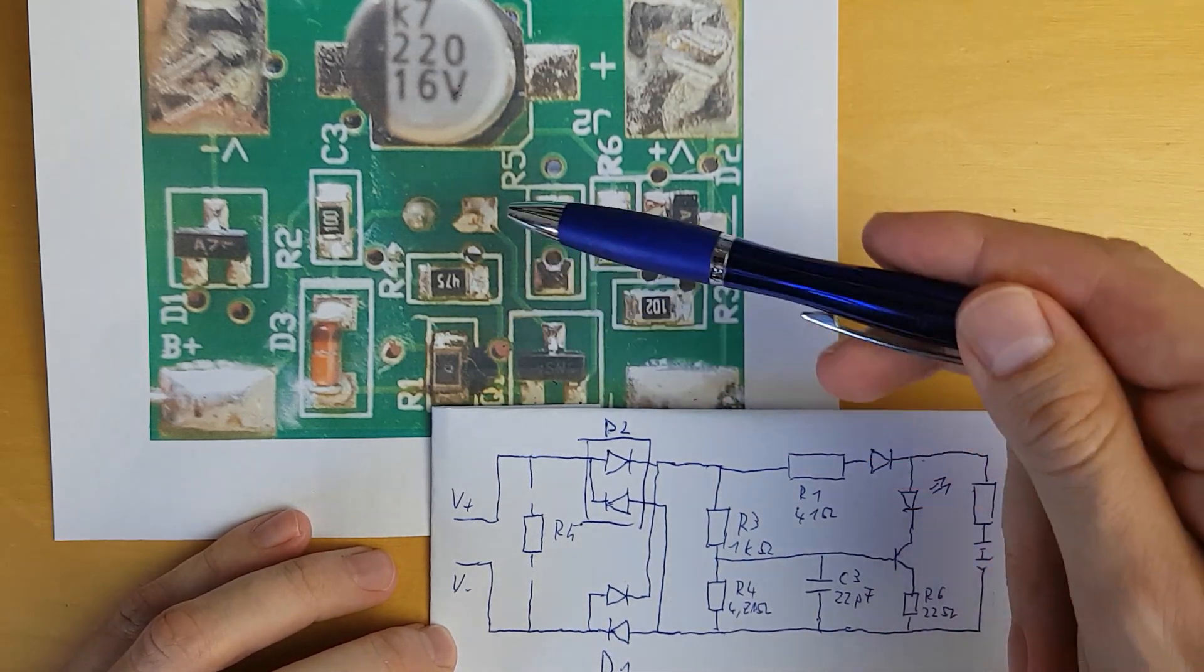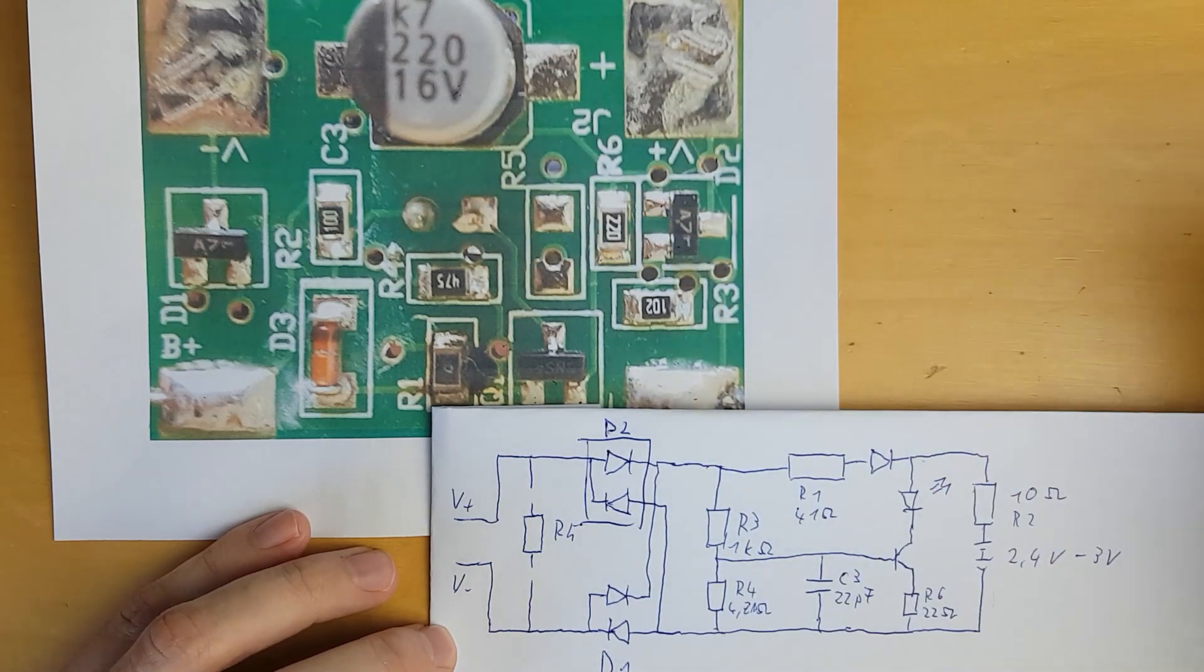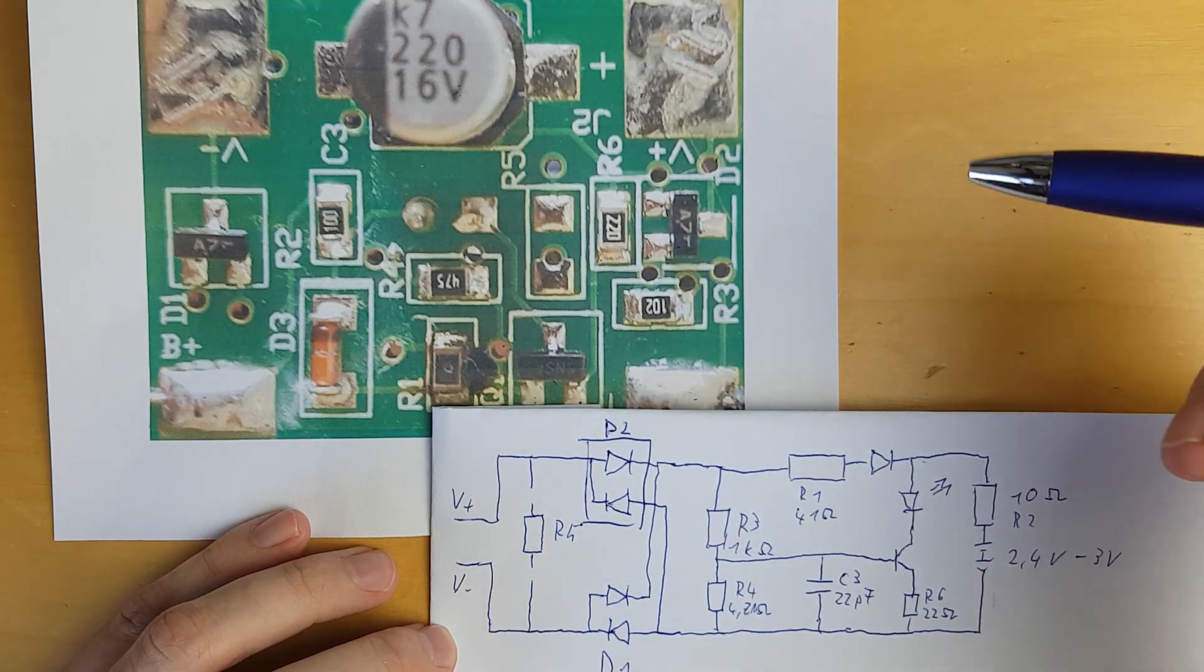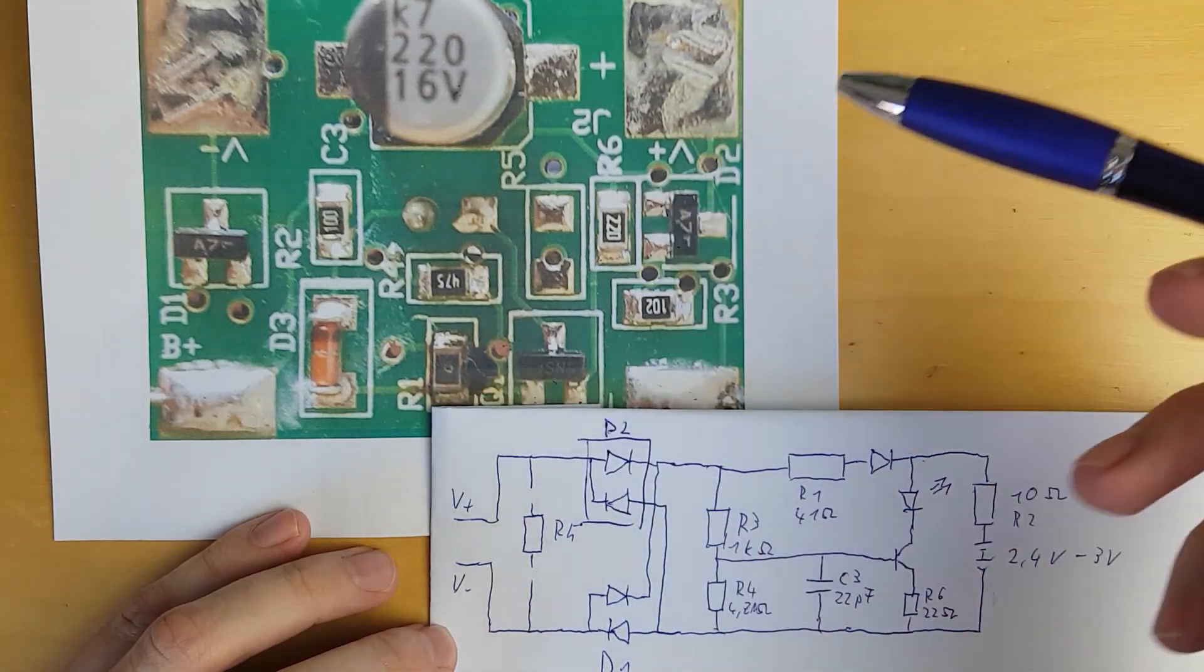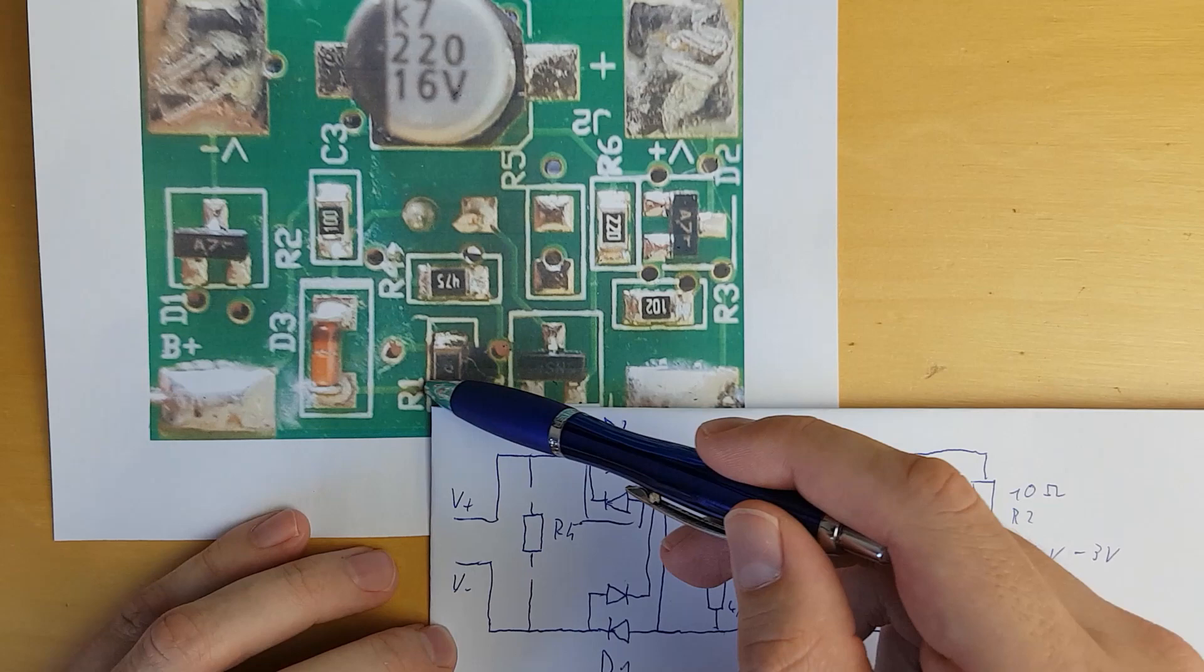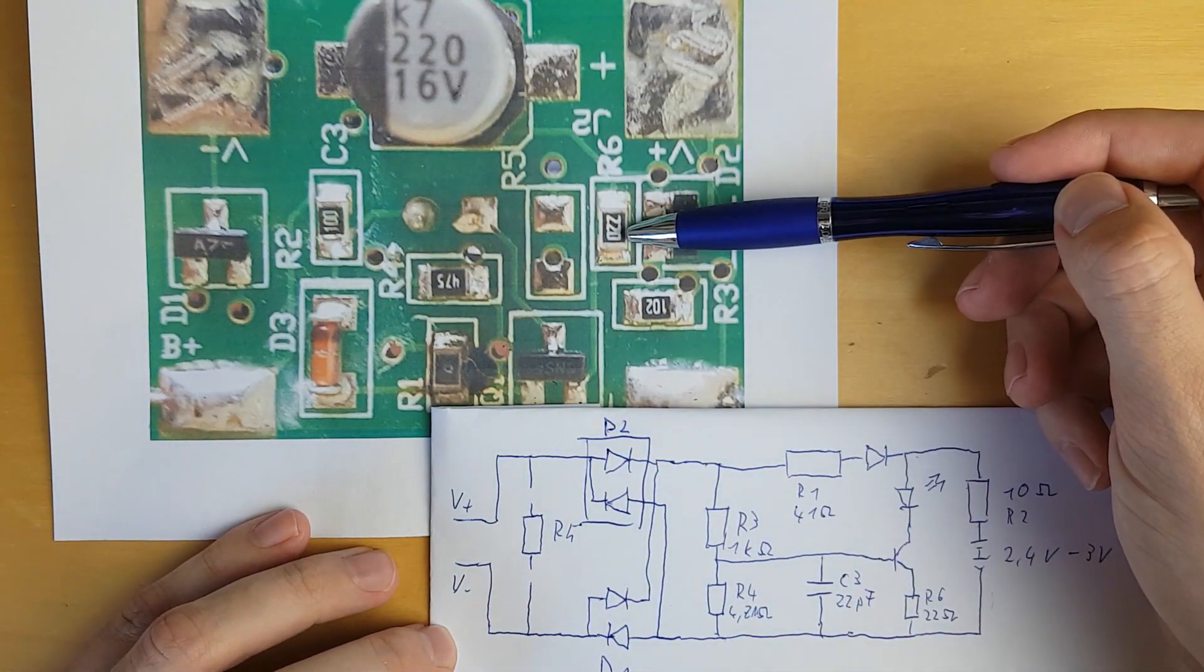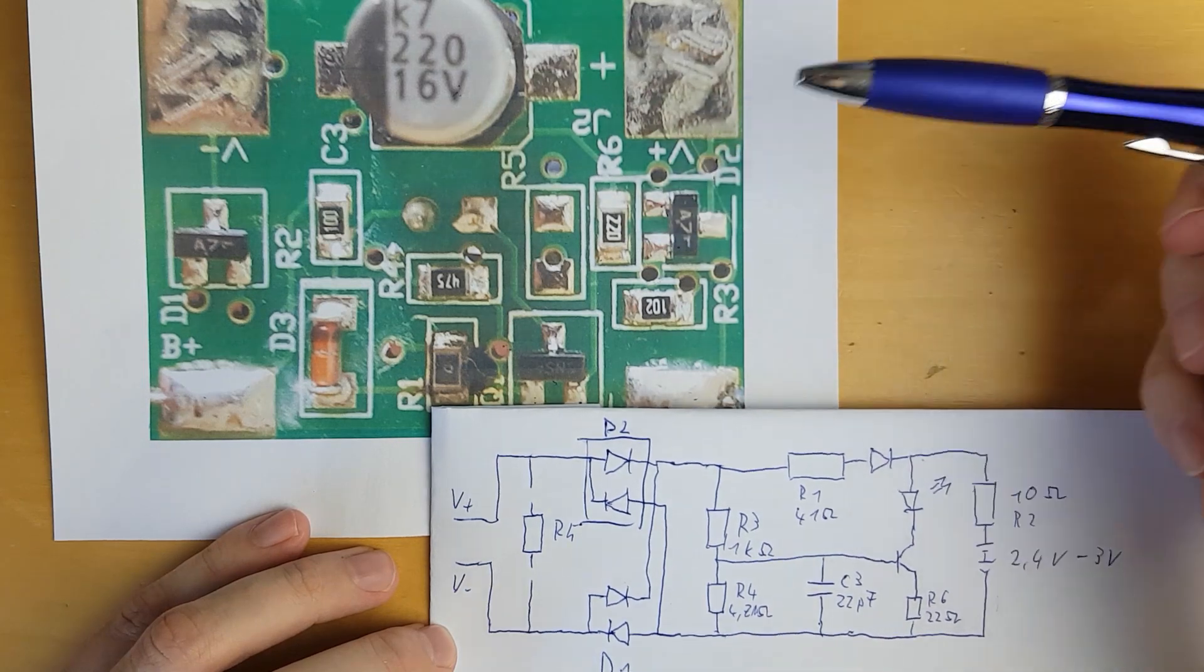And it will turn on the LED. The LED will be connected to power via this R1, this diode, to the LED, the transistor, this R6, and then back to the minus rail.